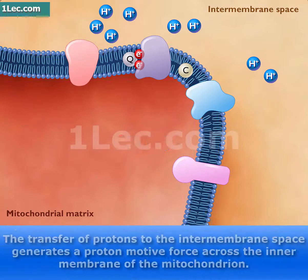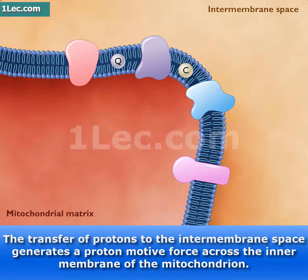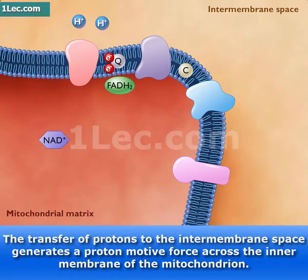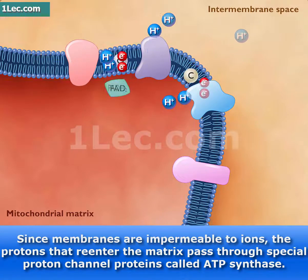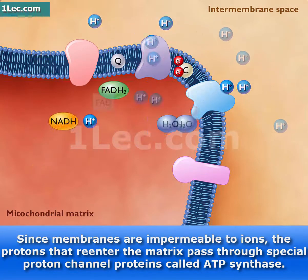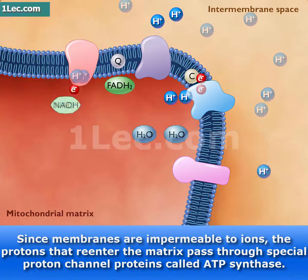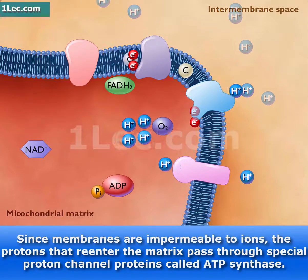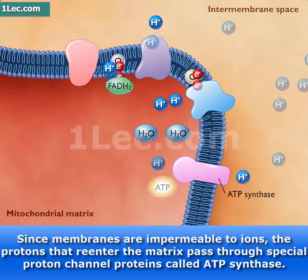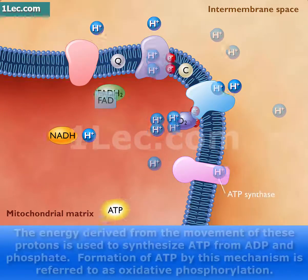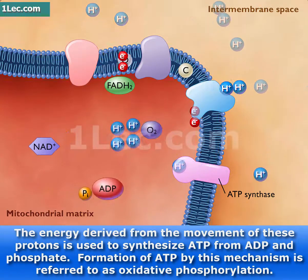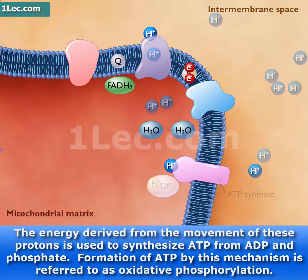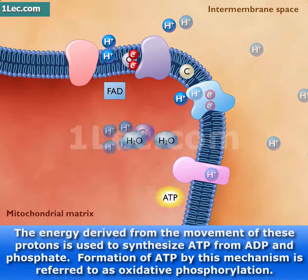The transfer of protons to the intermembrane space generates a proton motive force across the inner membrane of the mitochondrion. Since membranes are impermeable to ions, the protons that re-enter the matrix pass through special proton channel proteins called ATP synthase. The energy derived from the movement of these protons is used to synthesize ATP from ADP and phosphate.